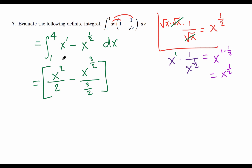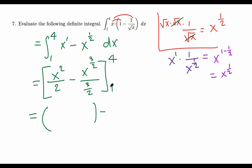No constant C is needed since this is a definite integral. We evaluate from 1 through 4. The 3/2 in the denominator flips to become 2/3 in front. We evaluate the antiderivative at the upper limit 4 minus the lower limit 1.